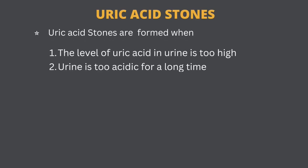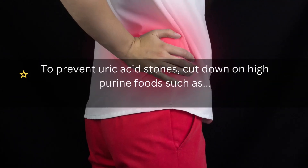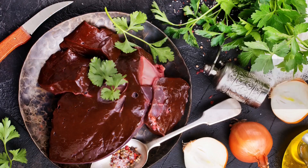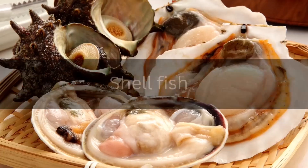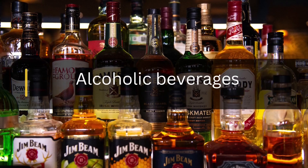Uric acid stones are formed when the level of uric acid in the urine is too high, or the urine is too acidic for a long time. To prevent uric acid stones, cut down on high-purine foods such as red meat, organ meat, shellfish, sardines, and alcoholic beverages.